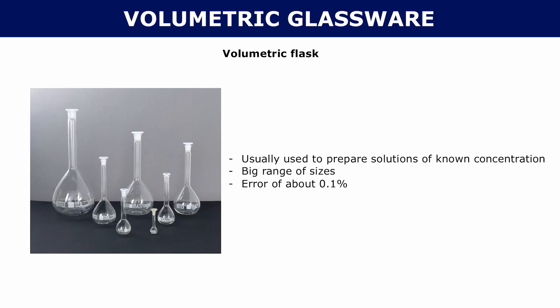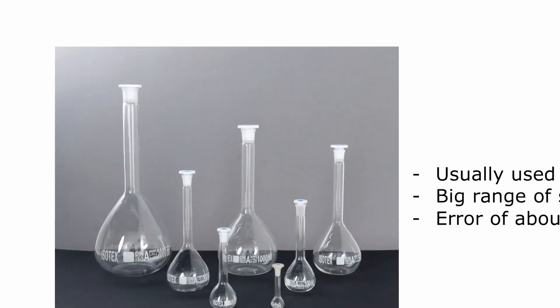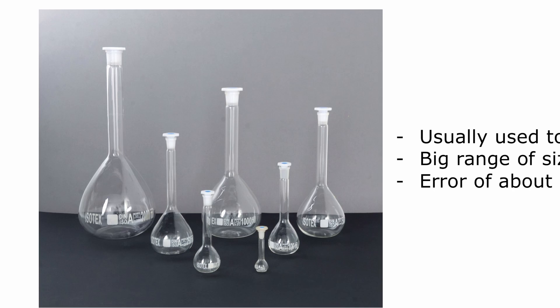Let's go on to volumetric flasks. Volumetric flasks are used to prepare solutions of known concentration. They have a really big range of sizes. They're really accurate, they have an error of about 1%. And they're very different from graduated cylinders in that they usually only have one marking. It's kind of hard to see, but if you look at the picture, all of these volumetric flasks have a line on them. They're about here-ish.